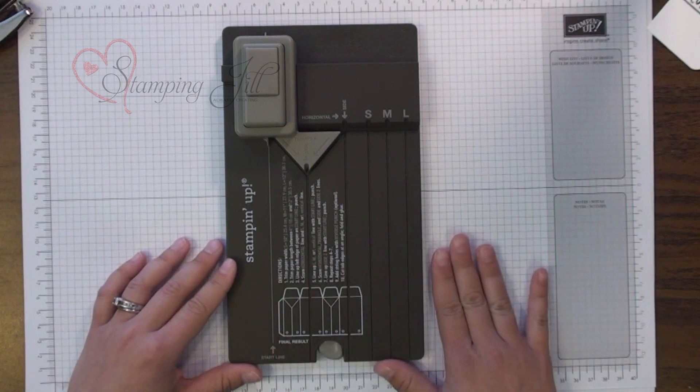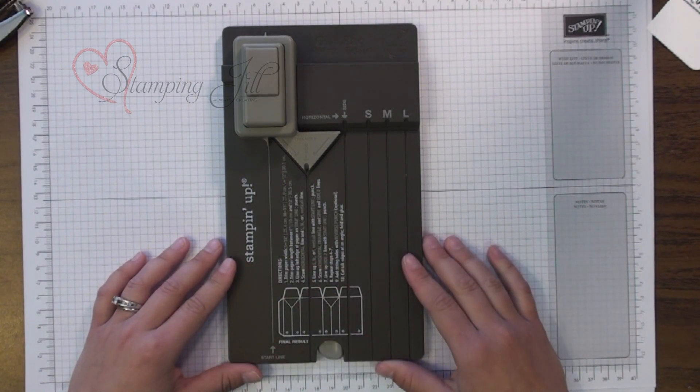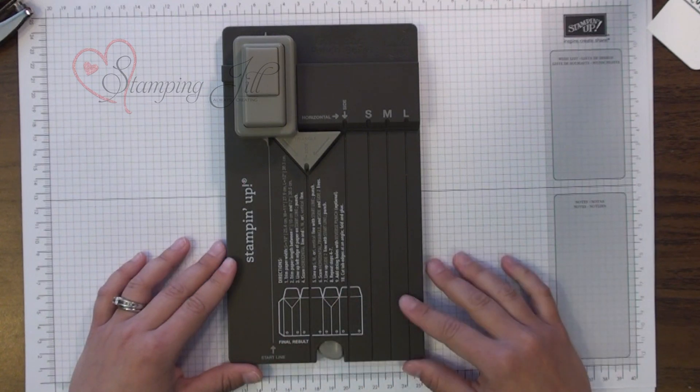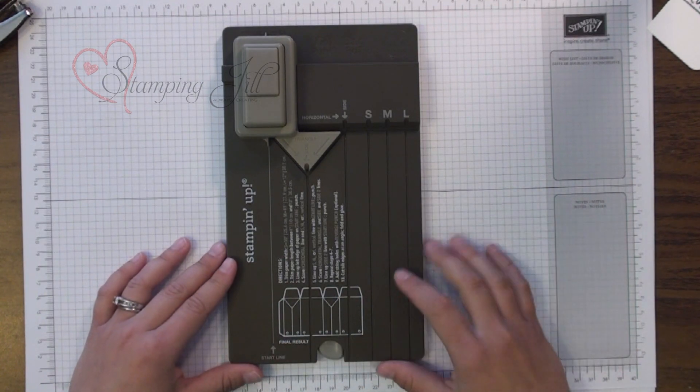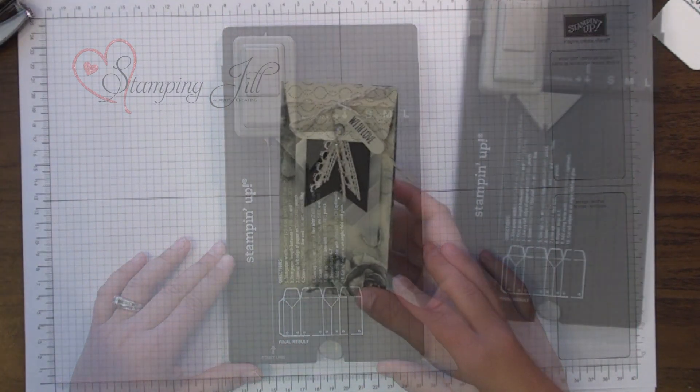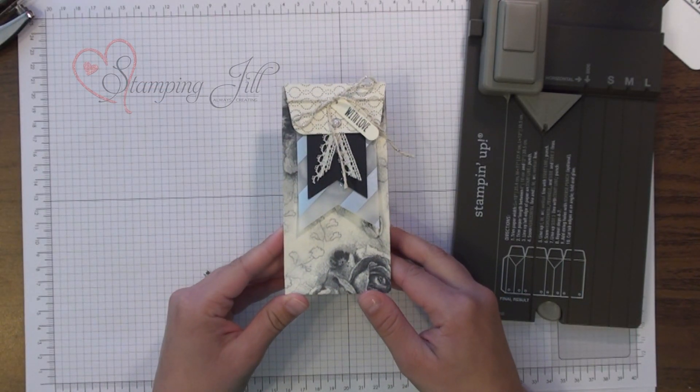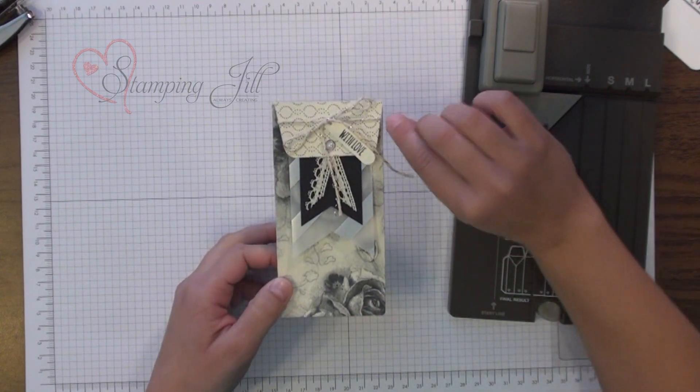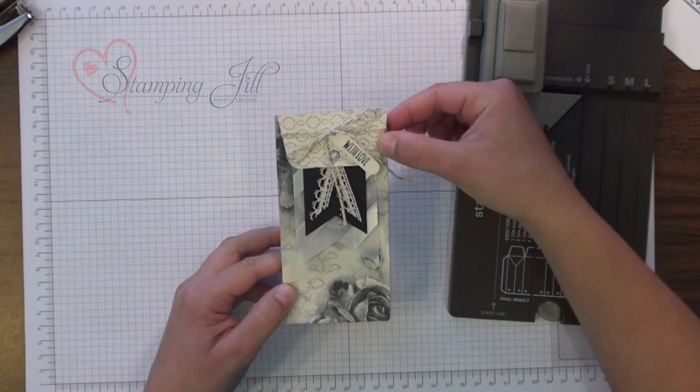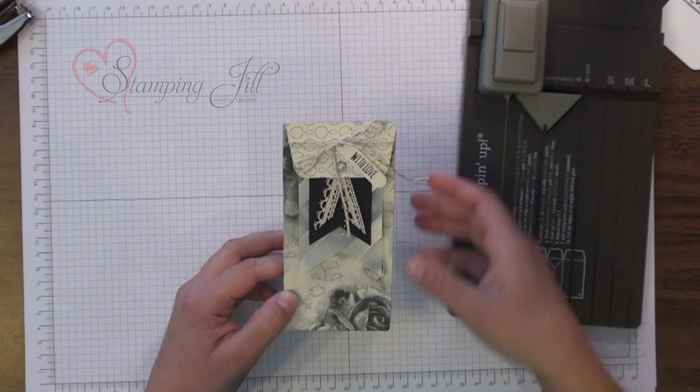The punch board is awesome. It's in the new catalog and it has all the directions on how to cut your paper and everything for a small, medium or large bag on it and it's really fun. The first project I wanted to show you is made with the Timeless Elegance paper and it has this cute little flap on it to close it instead of just having it open at the top.